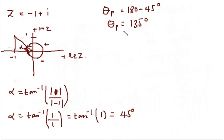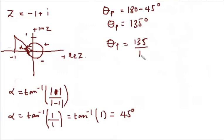If we wanted to convert to radians, it would be theta_p equals 135 divided by 180 times pi, which is ultimately equal to 3 pi over 4.